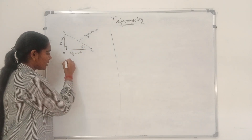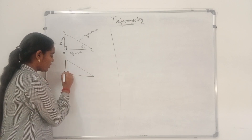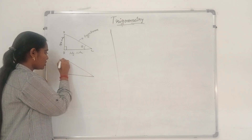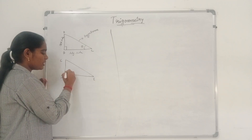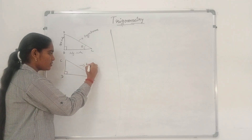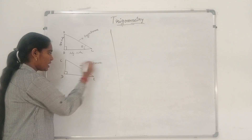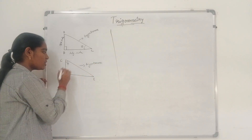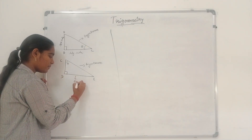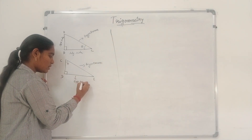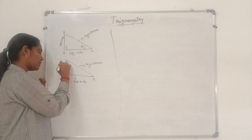Now consider another right-angled triangle C, D, E. The side opposite to the right-angle is hypotenuse. Now I am taking theta here. So this side opposite to theta is the opposite side, and this side adjacent to theta is the adjacent side.